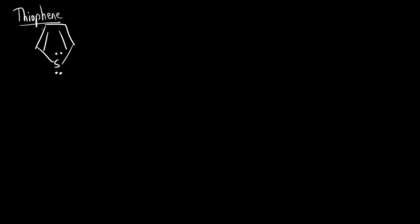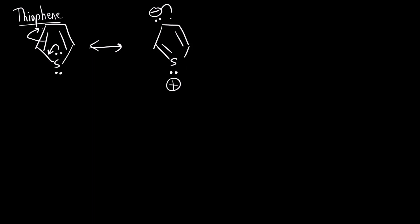The last compound after furan is thiophene. Thiophene has the same resonance structure as furan, only instead of oxygen it is sulfur. Oxygen and sulfur both belong to group 16 — the same group. Again, this lone pair will move here and the pi electrons will shift. What we get is a five-membered ring with sulfur having a lone pair, forming three bonds, so it gets a positive charge, with a lone pair and negative charge on the adjacent carbon.